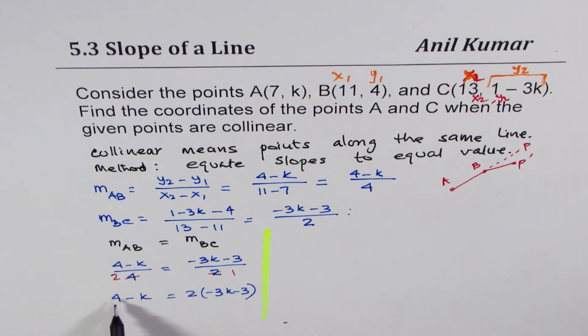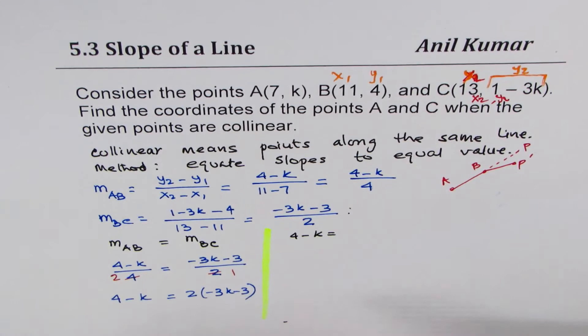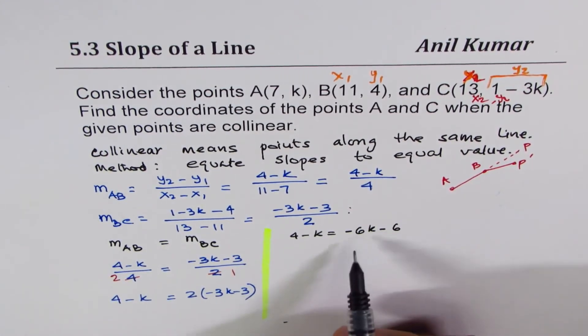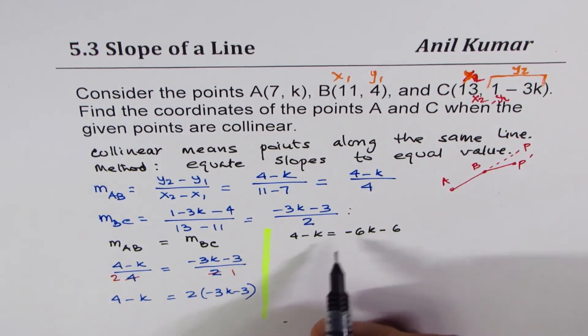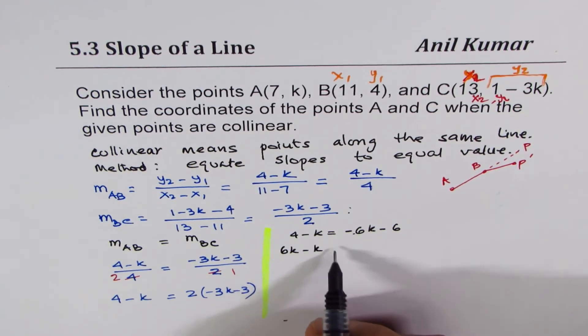Anyway, let's begin to continue. 4 minus K equals 2, open this bracket, minus 6K minus 6. Now bring the terms together. So we'll bring the K's to the left side. Minus 6K becomes 6K, and then we have minus K,